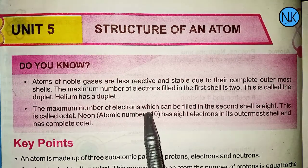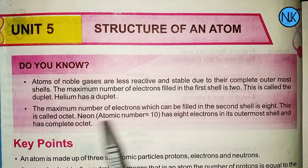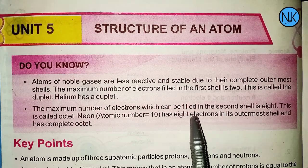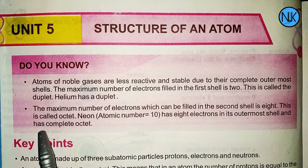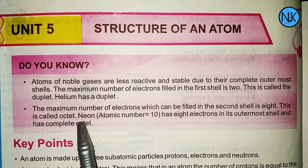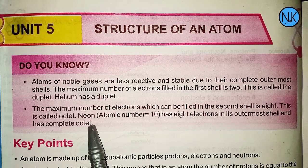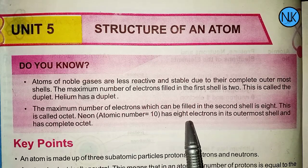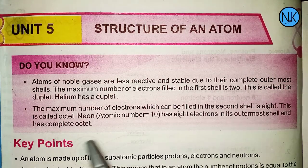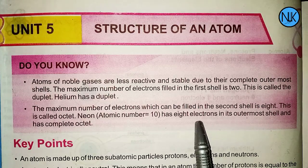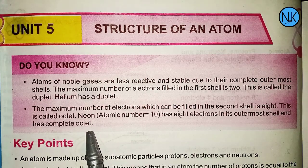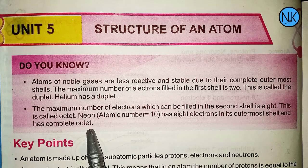The maximum number of electrons which can be filled in the second shell is 8. When the outermost shell has 8 electrons, this is called the octet rule. For an atom with atomic number 10, there are 8 electrons in the outermost shell, giving it a complete octet and making the second shell fully filled with 8 electrons.